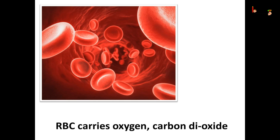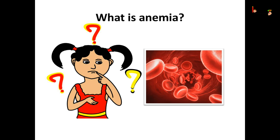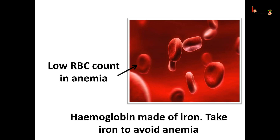RBC contains a red pigment called hemoglobin, which is the reason for the red color of the blood — just like chlorophyll is the reason for the green color of leaves in plants. Hemoglobin not only makes the blood red, it binds with oxygen and transports it to all the parts of the body and ultimately to all the cells efficiently. In anemia, the amount of hemoglobin reduces, so the person feels weak as the blood couldn't carry much oxygen to the organs and cells for respiration.